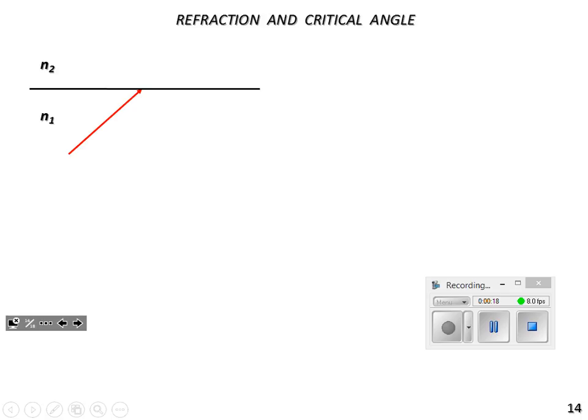Let's imagine we have ourselves an incident ray here. There's a normal. Here's our incident angle. Now, we know that no matter what, when light or any wave hits a boundary between two media, at least part of the wave reflects.